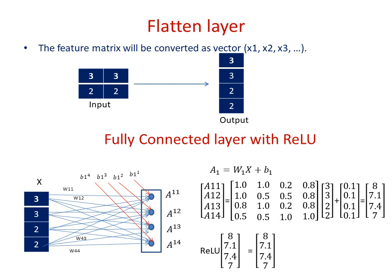Each neuron receives input from all four inputs after multiplying with the corresponding weight. These weights and biases must be initialized before running the program. To calculate the output of this fully connected layer we use the formula: A = WX + B, where W is the weight matrix, X is the input, and B is the bias. The weight matrix W is 4×4 because there are 4 neurons and 4 inputs. The input X is [3, 3, 2, 2] as a 4×1 vector, and the bias B is initialized as 0.1 for all four values.